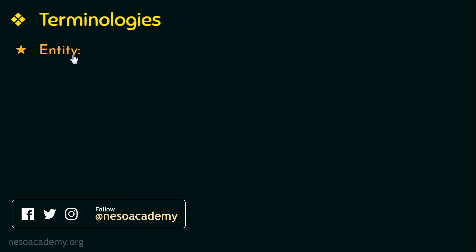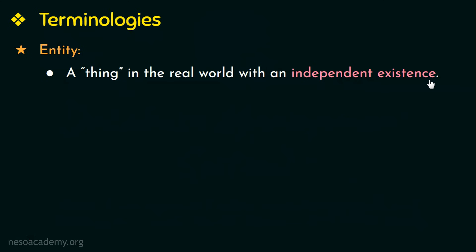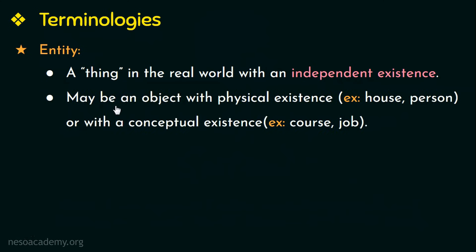Now, what is an entity? It is a thing in the real world with an independent existence — that is, a thing or an object that has its own identity or that can be identified easily. An entity may be an object with physical existence, like for example a house, a person, an employee, etc., or it can be an object with a conceptual existence, like for example a course or a job.